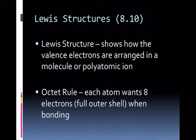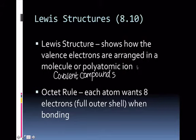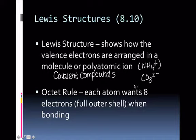The first thing you need to remember is Lewis structures. A Lewis structure shows you how the valence electrons are arranged in a molecule or polyatomic ion. When we're drawing Lewis structures, we're drawing how they are sharing electrons — these are for covalent compounds, also called molecules — and this also works with polyatomic ions, like ammonium or carbonate.